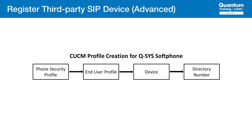Next, we create the end user profile that includes the credentials the soft phones will use to register. These credentials are shared by all of the soft phones too. Finally, we create the phone definition, which consists of a device and the associated directory numbers. The directory numbers are the phone numbers used for the soft phones. Let's look at each step in detail.